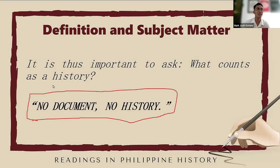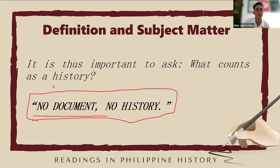This mantra emphasizes the essential role of written records, artifacts, and other forms of documentation in preserving and reconstructing the events and narratives of the past, underlining the significance of tangible evidence in the study of history. Simply put, 'no document, no history' means that without documents, there will be no history. Traditional historians lived by this mantra — no document, no history.